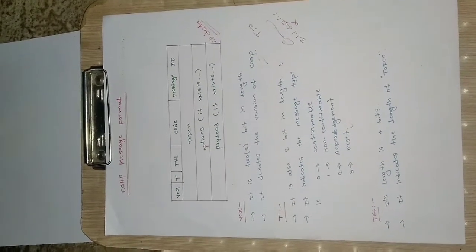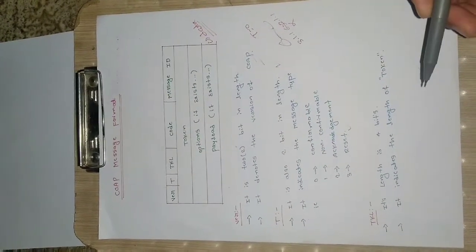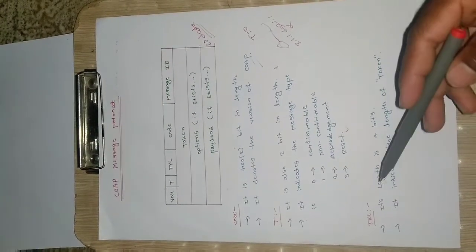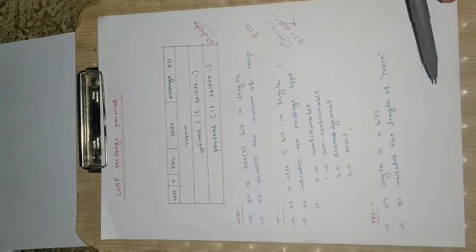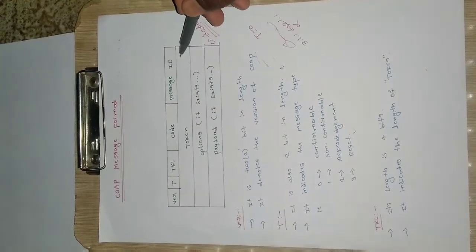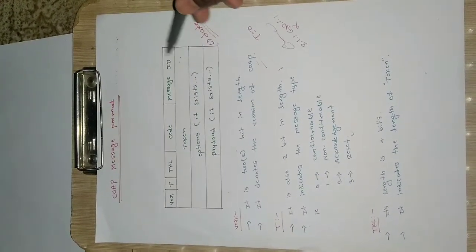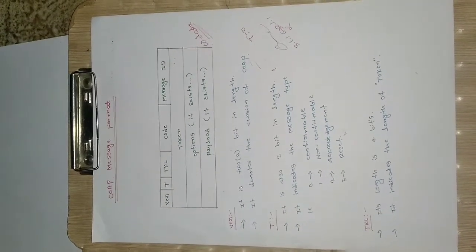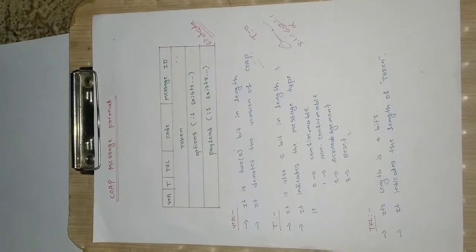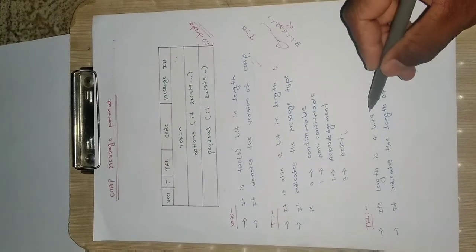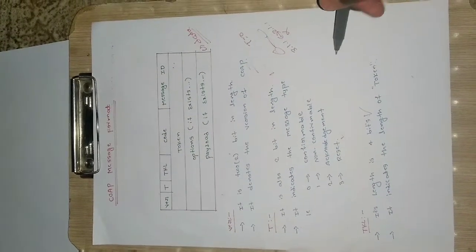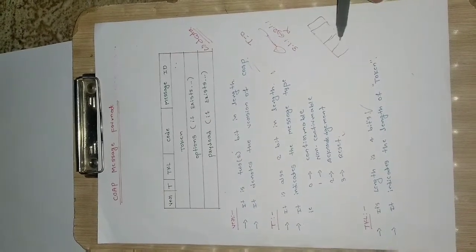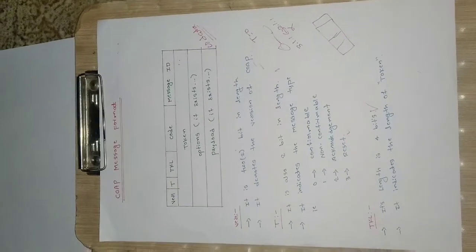That is the significance of 't' in the message format. Next is 'tkl', which stands for token length. It indicates the length of the token field. The length of the tkl field itself is four bits, so it can address a token length of up to sixteen in decimal.